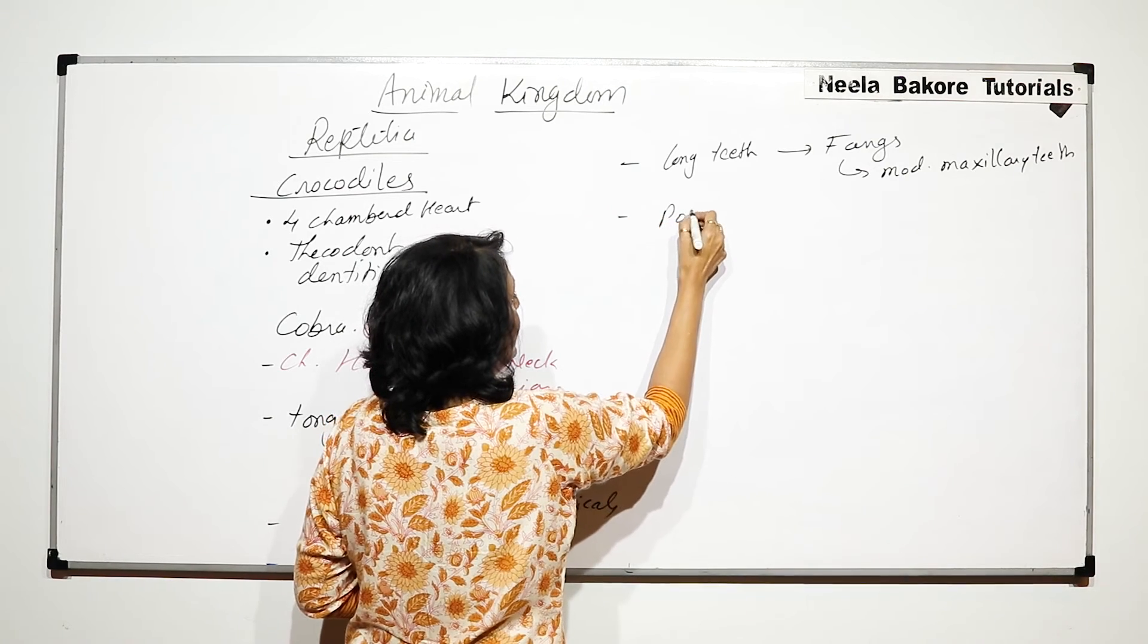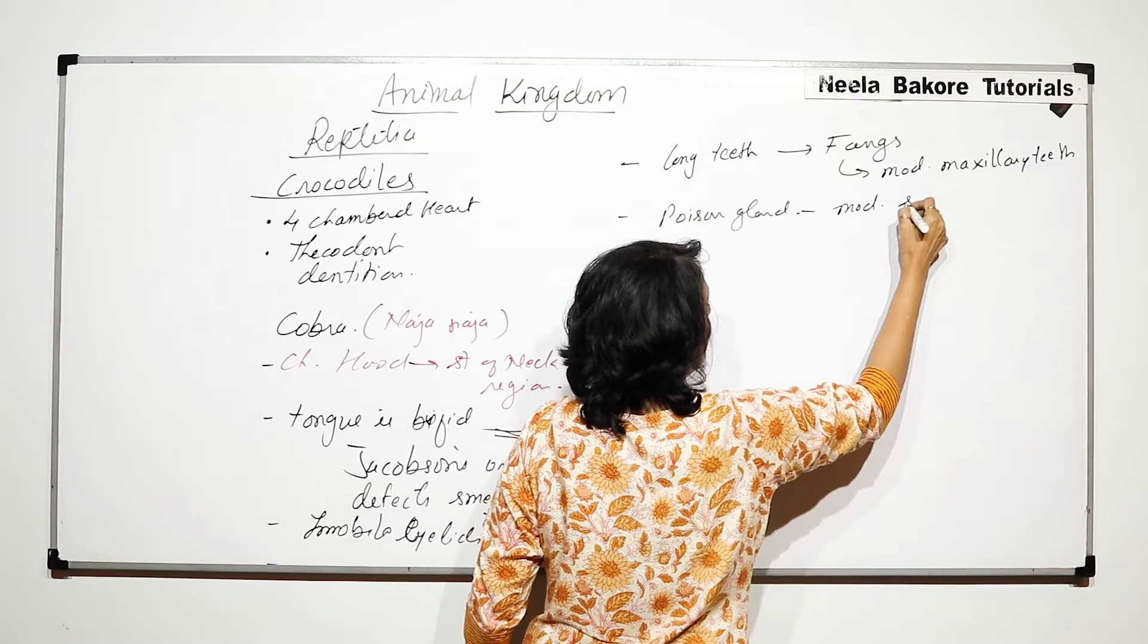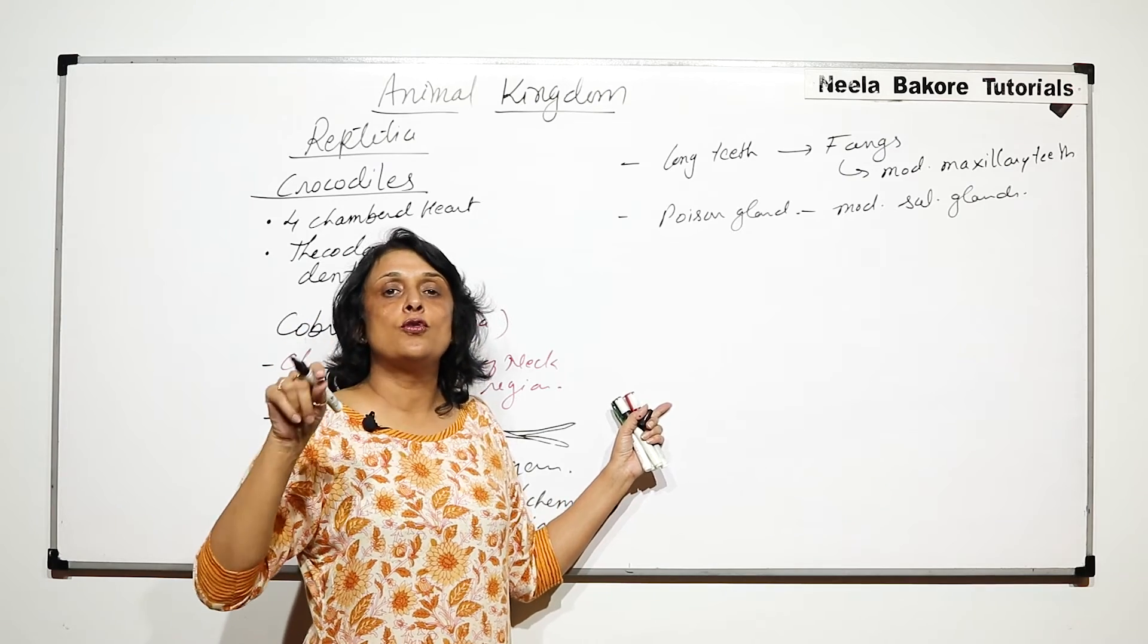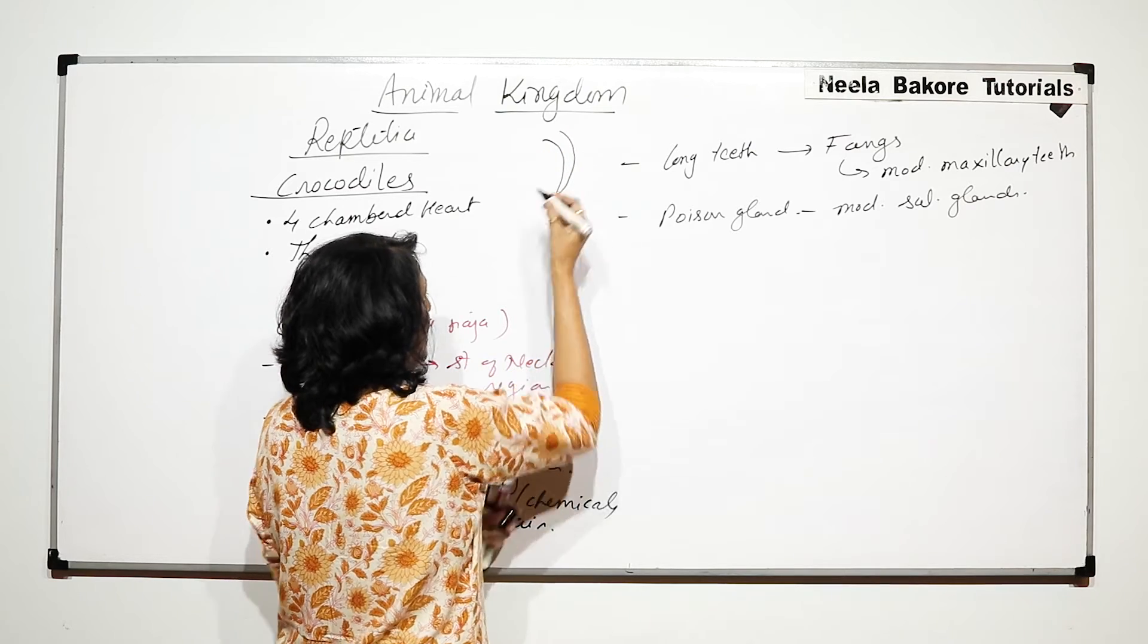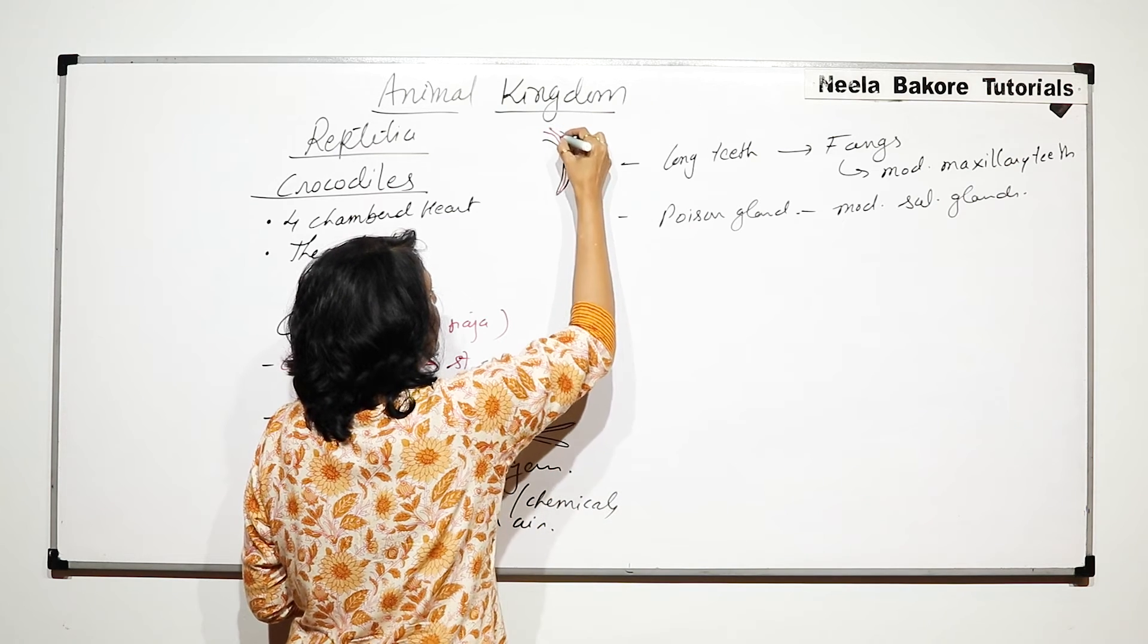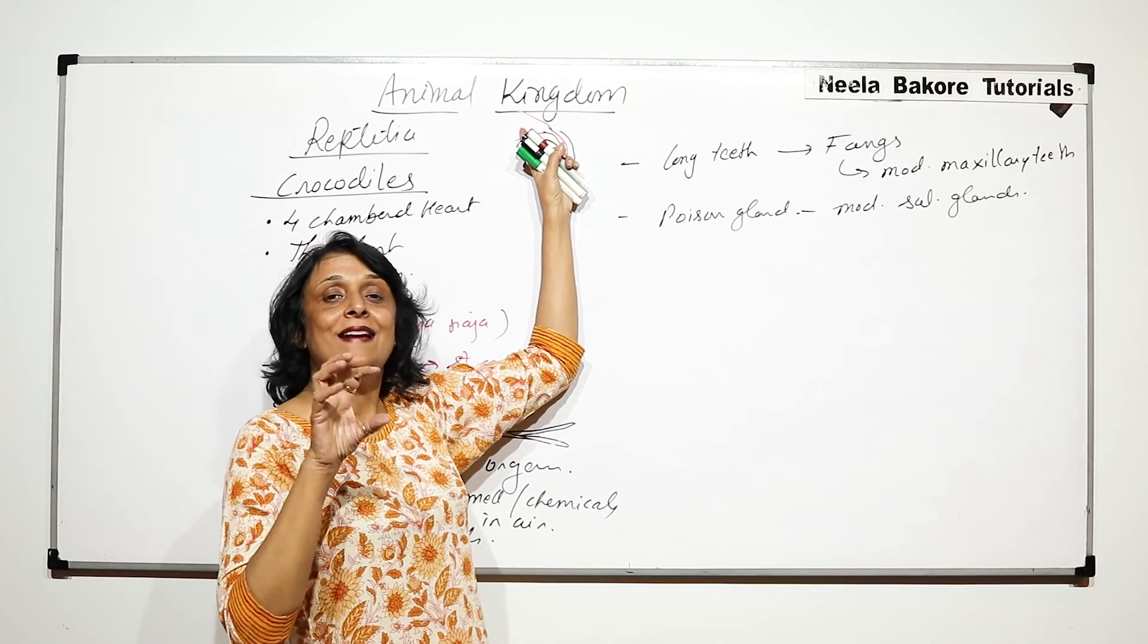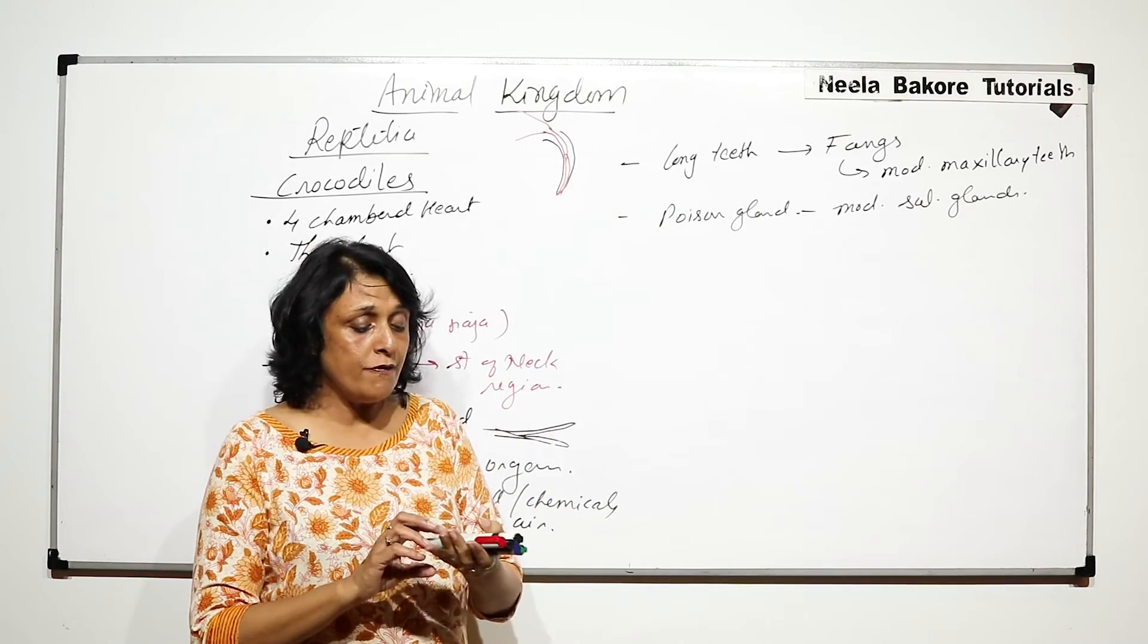The poison glands are modified salivary glands. These salivary glands, modified into poison glands, have a duct which goes through this fang. If this is the fang or tooth, there's a duct which comes here and opens at the tip of the fang. At the posterior side it's connected to the salivary gland. When this salivary gland releases the poison, it is injected into the body of the prey.